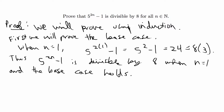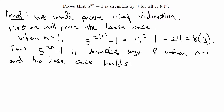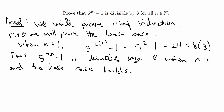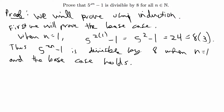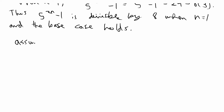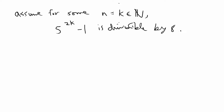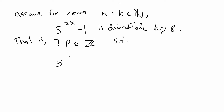Now, for the inductive step, for some k in the naturals suppose that 5 to the 2k minus 1 is divisible by 8, and we're going to use that to prove it holds for k plus 1, and thus for any n in the naturals. We assume for some n equal to k in the naturals that 5 to the 2k minus 1 is divisible by 8. To specify, we're defining divisible by 8 to mean there exists some p in the integers such that 5 to the 2k minus 1 equals 8 times p.